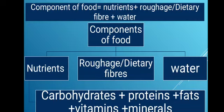Components of food. What are the components of food? They are nutrients plus dietary fiber and water. In nutrients, it consists of carbohydrates, protein, fats, vitamins and minerals.